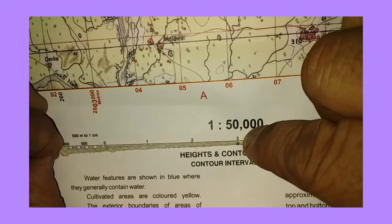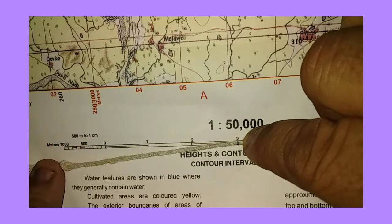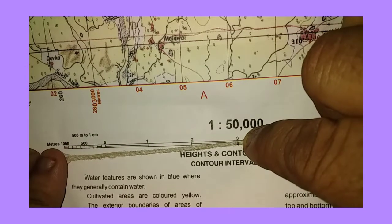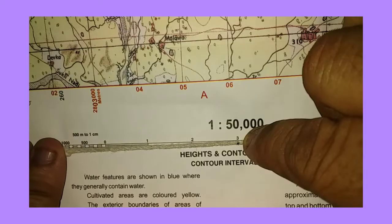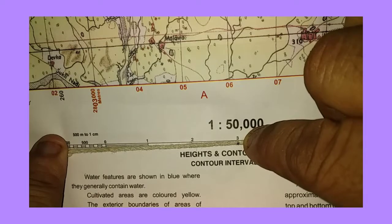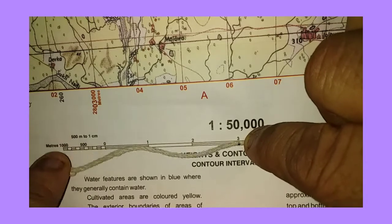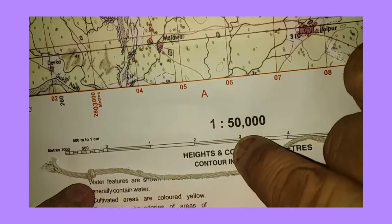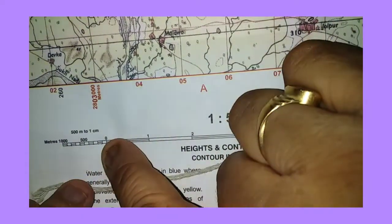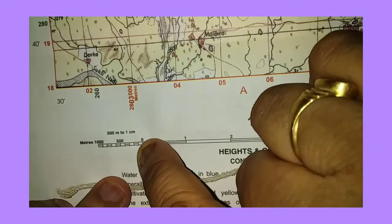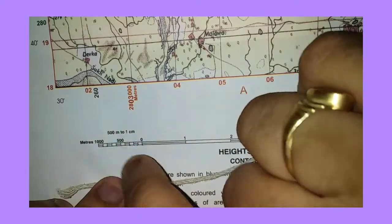You can see this knot is coinciding with the 9th division. Therefore, the length of the cart track will be 3 kilometers, and each division is 100 meters.